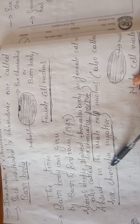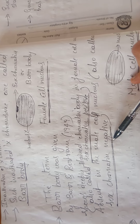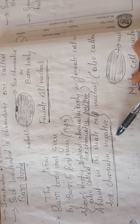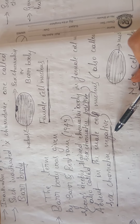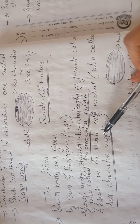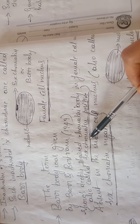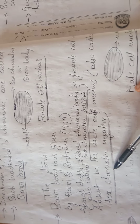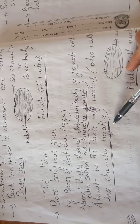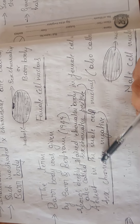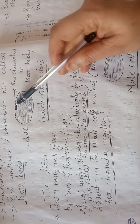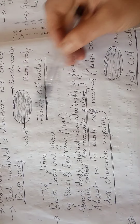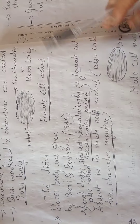In case of males, they will not take any stain because they have only one X chromosome and one Y chromosome — there is no extra X chromosome to get inactivated. So females are called sex chromatin positive, and males are called sex chromatin negative because there are no Barr bodies in males. Barr bodies can only be seen in females.